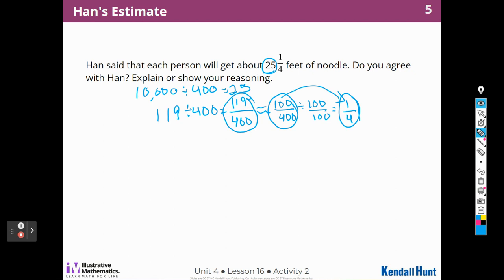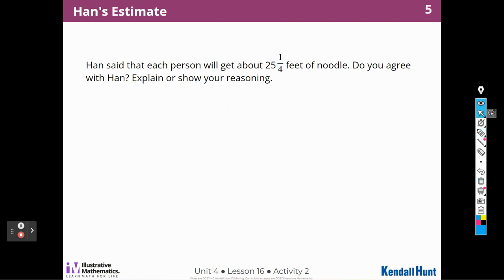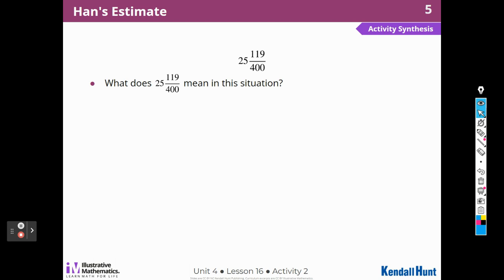So this is what was left over. I estimated that to be 100 over 400, and then I reduced that to be one fourth. So yeah, I agree with Han. That makes sense to me. What does 25 and 119 over 400 mean in this situation? That means that each noodle is 25 feet. So when I did 10,119 divided by 400, I got 25, right? And then the leftover was 119 over 400. So 25 feet was 10,000 divided by 400. And then the 119 divided by 400. Remember, we can write that as a fraction. That's what was left over. So we kind of did partial products for that, right?